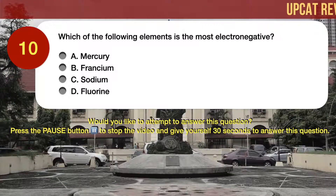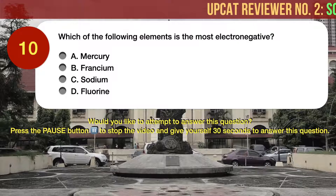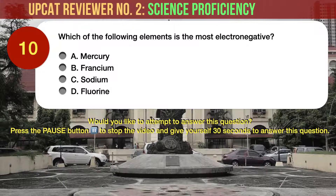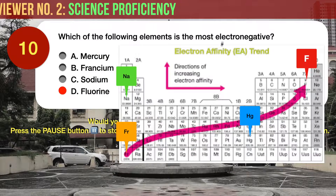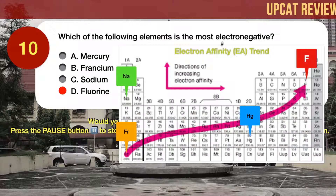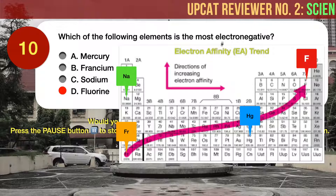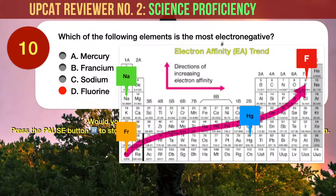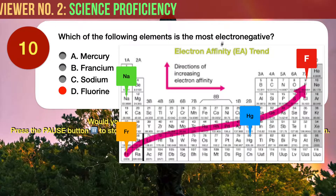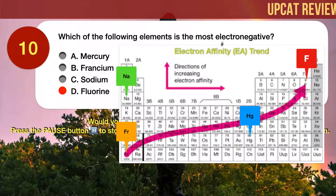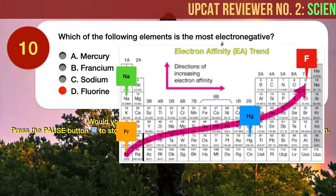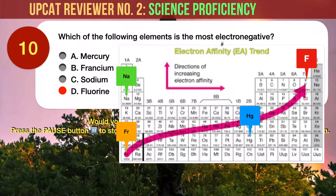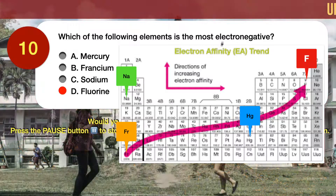Question number 10. Which element is the most electronegative? A, mercury. B, francium. C, sodium. D, fluorine. The correct answer is D, fluorine. Electronegativity increases from bottom to top in groups, and increases from left to right across periods, in the periodic table of elements. Thus, from among the choices, fluorine is the most electronegative. In fact, fluorine is one of the most electronegative of all the elements. In the Pauling electronegativity scale, fluorine is the most electronegative element — not helium or neon, since helium, neon, and argon are not listed in that scale. However, in the Allred-Rochow scale, helium has the highest electronegativity. Meanwhile, francium is the least electronegative of all the elements, regardless of the scale used.